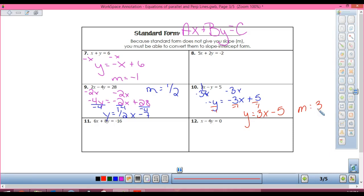Look at number ten. First step, subtract 3x. So I have negative y equals negative 3x plus 5. So what do I have to do to get rid of that negative in front of my y? Divide everything by negative 1. Y equals 3x minus 5. What's my slope? Three.